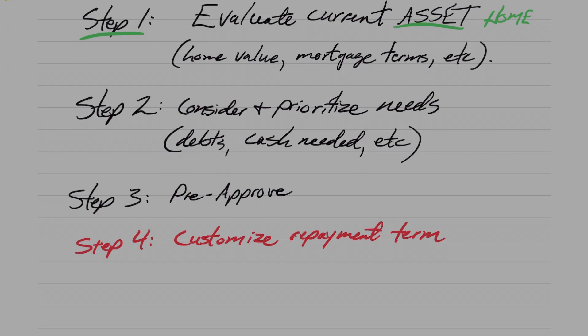Okay, so then step two is to consider and prioritize your cash needs. That includes all of your debts. That includes other cash that you may want for other opportunities. In other words, how much are you wanting to get out of your house? That's the real question, in addition to paying off your current loan. And of course we go into more detail about that, interest rates and all that kind of stuff. But get an idea of how much you would want. And then, this is really, really important, is to prioritize.